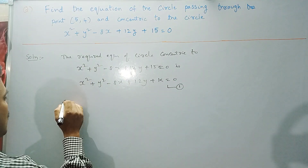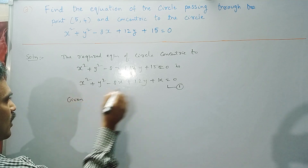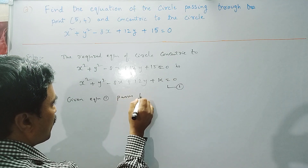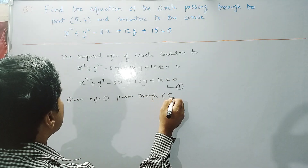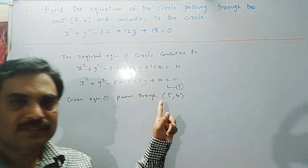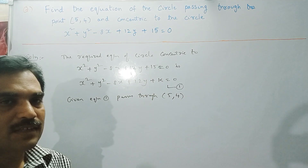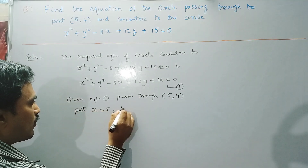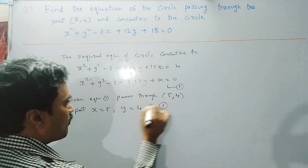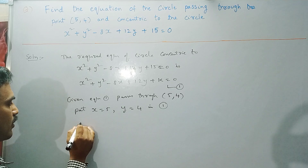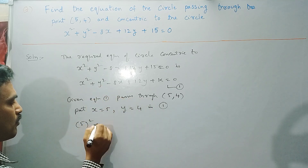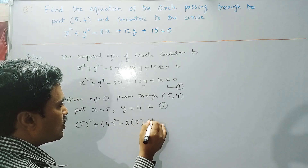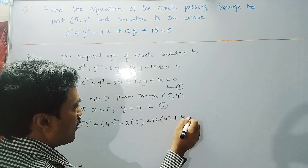Now, the other condition given is that equation 1 passes through the point (5, 4). So we treat x as 5 and y as 4 and substitute into equation 1. Put x = 5, y = 4 in equation number 1. We get: 5² + 4² − 8(5) + 12(4) + k = 0.